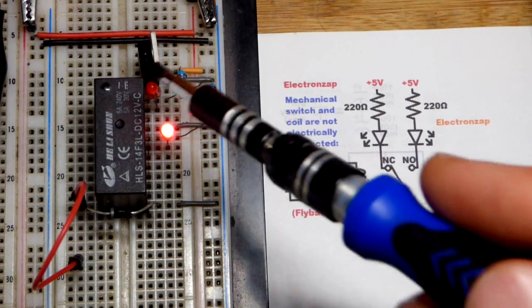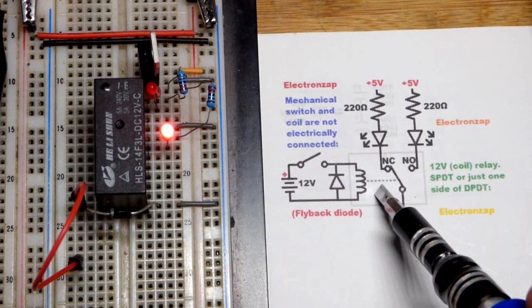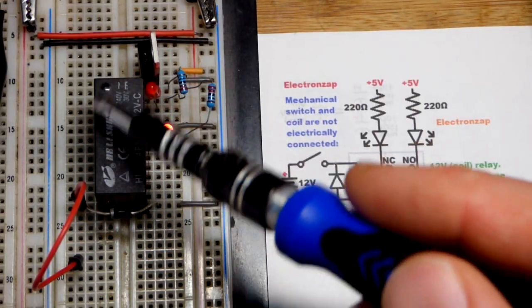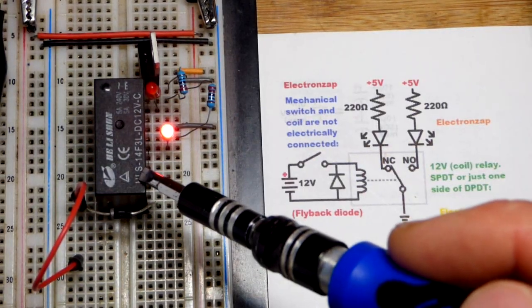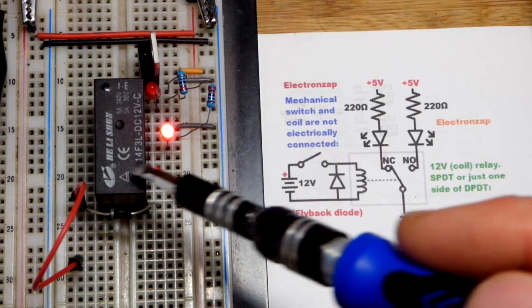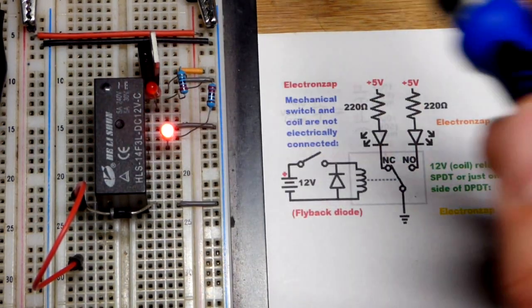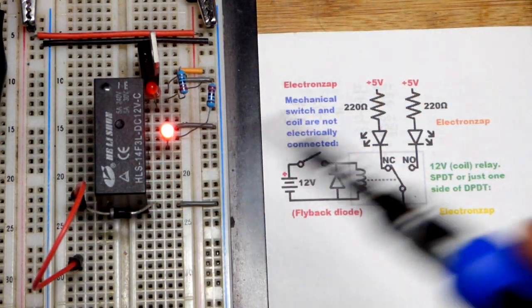So we got the one on the left there. This is a mechanical switch, that's this upper part right there, and then it's controlled electrically. None of the electricity over here interacts with the electricity over here although I have one power supply powering everything.